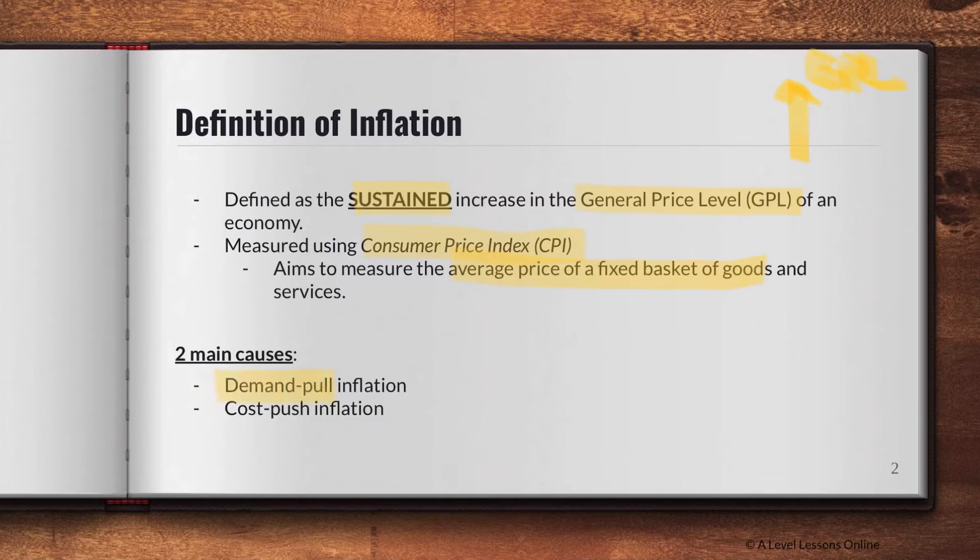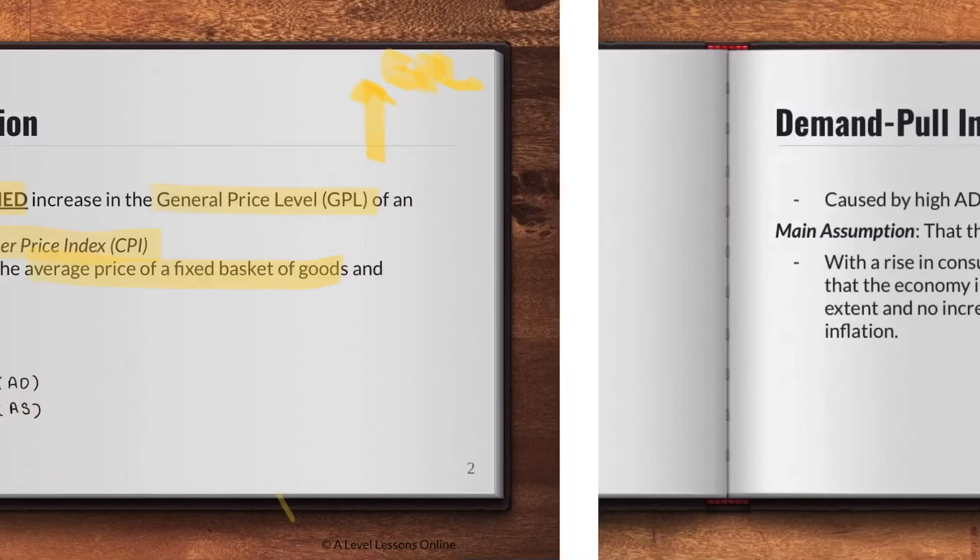There are two main causes of inflation. The first is demand-pull and the second is cost-push. Just remember your AD and AS: demand-pull is always going to be caused by AD, and cost-push is going to be caused by supply-side factors, which is your AS.